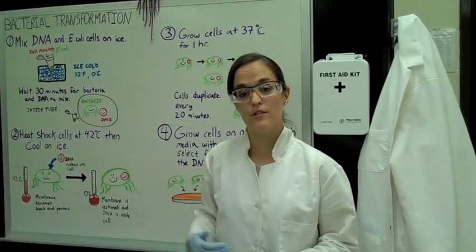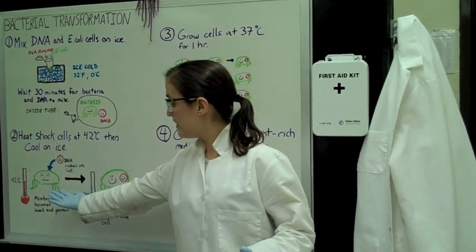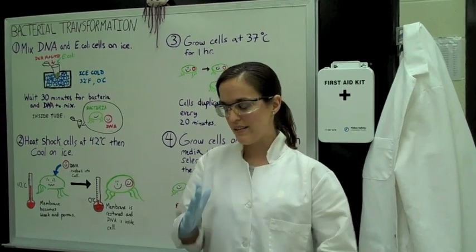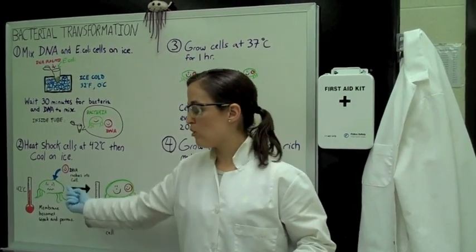Next we heat shock at 42 degrees Celsius. This is a special temperature because our little E. coli is not quite happy. Its cell membrane has now become porous, weak, leaky as some scientists call it. And at that temperature the DNA rushes into the cell.